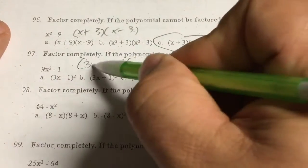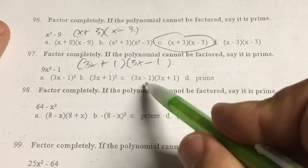Parentheses, 3x plus 1, 3x minus 1. Choice C again.